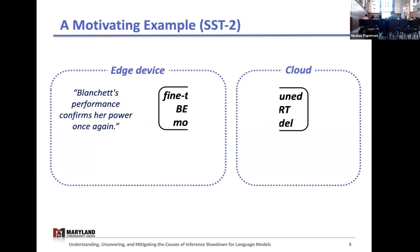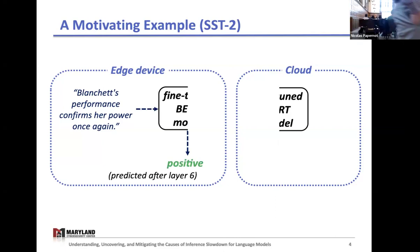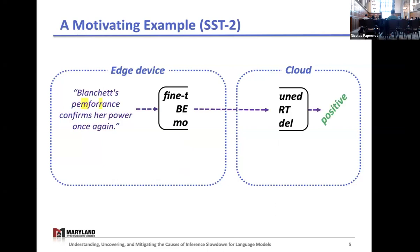I wanted to show this kind of real-world scenario of where this can be problematic. Take this IoT setting example, where we have an edge device that's resource constrained, so we just put half of the model on the device and put the rest on the cloud. With the original sentence and this early exiting strategy, the input can be accurately predicted just on the device itself. But when we launch this slowdown attack, now the input has to pass through the full model, which means the input has to be transmitted to the cloud. Slowdown attacks can cause this extra cost associated with these excessive transmissions to the cloud, and that can be very costly.